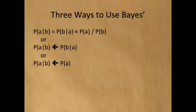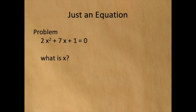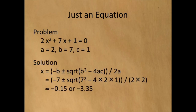Unfortunately, we're going to go about this the long way around. The first possibility is that we will use Bayes' law as an equation. Consider the quadratic formula. The quadratic formula tells us how to go from knowing the coefficients of a quadratic equation to finding the roots of a quadratic equation. Consider the problem 2x squared plus 7x plus 1 equals 0. What is x? We start with the quadratic equation, substituting in 2, 7, and 1, and simplifying, we get that x equals either minus 0.15 or minus 3.35.